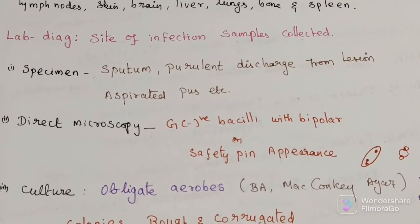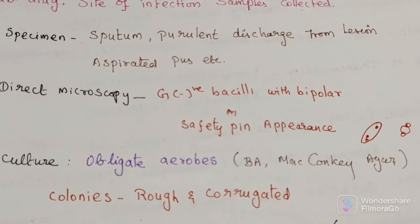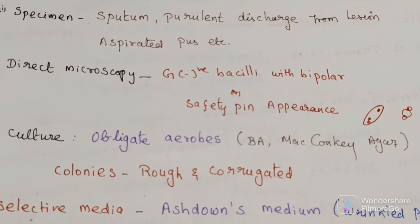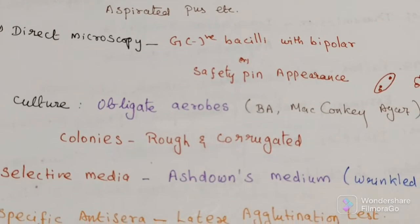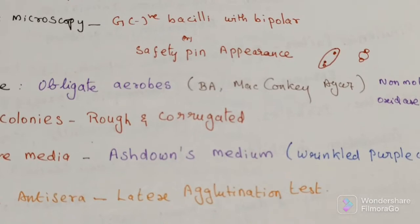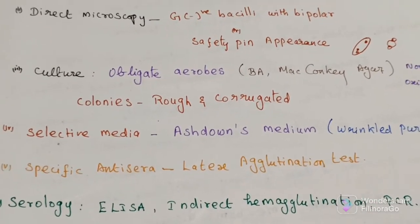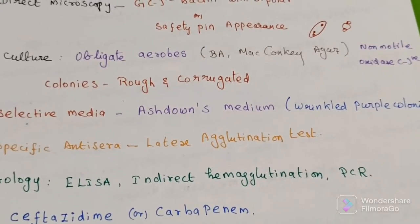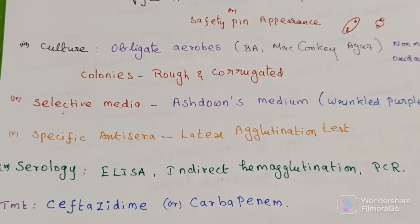In summary: specimen is collected based on site. Direct microscopy shows gram-negative bacilli with a safety pin appearance. The organism grows on blood agar and MacConkey agar. Selective medium is Ashdown's medium, producing wrinkled purple colonies. Serological identification uses latex agglutination test, ELISA, indirect hemagglutination test, and PCR.